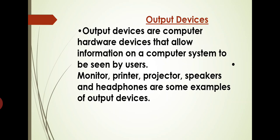Now what are the output devices? Output devices are hardware devices that allow the information on the computer system to be seen by user. The data being processed in the computer, we can see with the help of output devices. Examples you are well aware because in the starting we have discussed those are monitor, printer, projector, speaker, headphones.